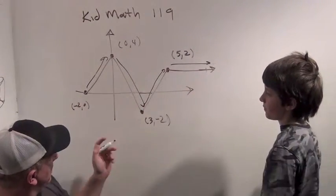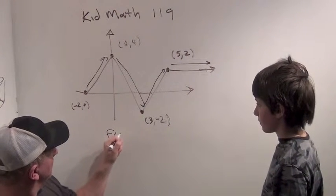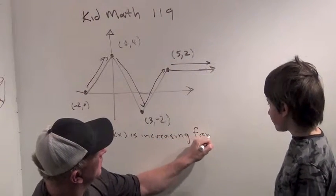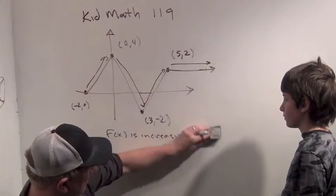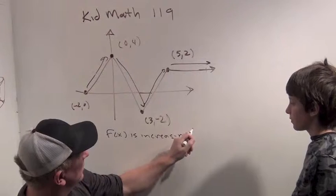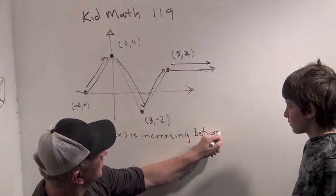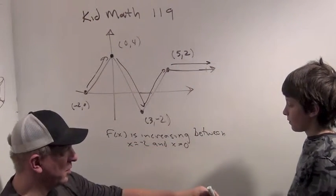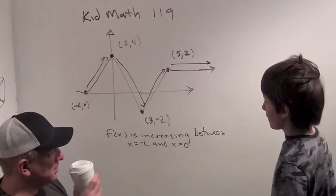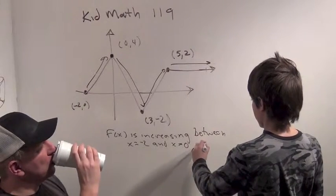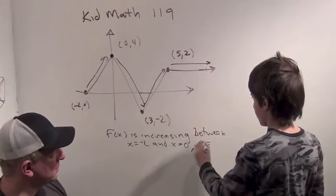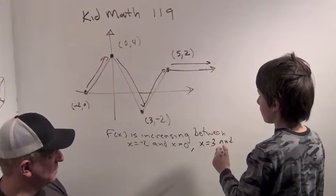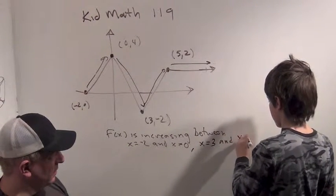Okay. So f of x is increasing between x equals minus 2 and x equals 0. Where else is it increasing? It's increasing from x equals 3 and x is 5. Okay. All right. Good. So that's just part of our mathematical language. We're going to work on translating what we see to sort of words that we can use to describe it.